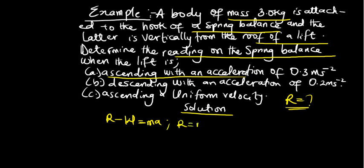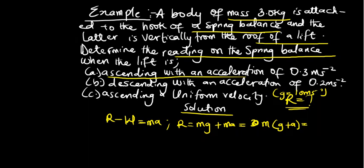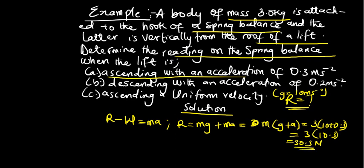So R equals m times (g plus a). Substituting the values: m is 3 kg, g is 10 m/s², and a is 0.3 m/s². So R equals 3 times (10 + 0.3), which gives 3 times 10.3. Our answer is 30.3 newtons. Note that the normal reaction — your reading — is measured in newtons.